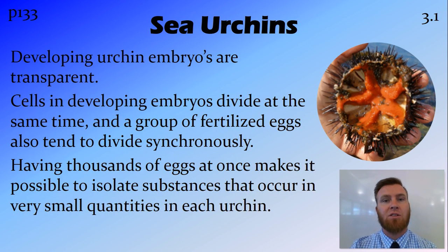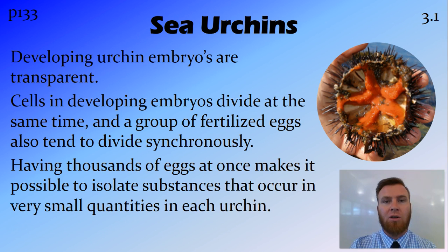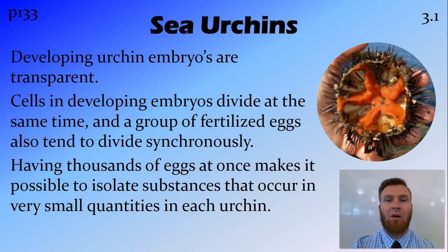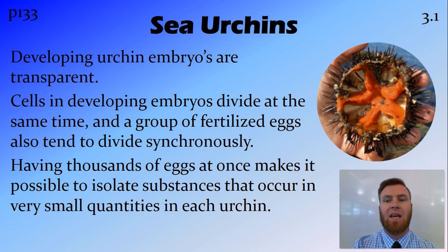There are a few reasons Boveri used sea urchins for his experiments. Firstly, the urchin embryos are transparent, so it's very easy to see into them as they're developing. The embryos also divide synchronously, so as the embryo divides into two, then four, then eight, all those cells are in the same stage of mitosis at the same time. Having thousands of eggs all at the same stage also means that very small things can be isolated in quantities that are easier to work with. That pink stuff visible in the image of a sea urchin is the eggs.